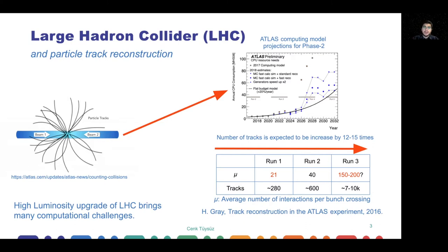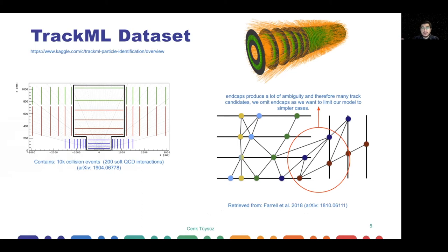If you look at the table here, the mu is the average number of interactions per bunch crossing, representing the particles that we are colliding. At first, CERN started with 21, then they switched to 40. But now with the new upgrade, we are expecting to reach 200. This would mean that we need to process 15 times more tracks, which will put a lot of burden on the algorithms. That's why CERN created a public challenge to invite machine learning experts all over the world to contribute to this problem.